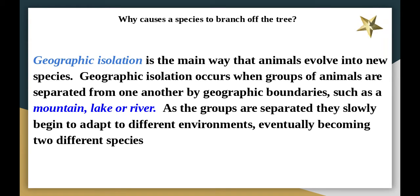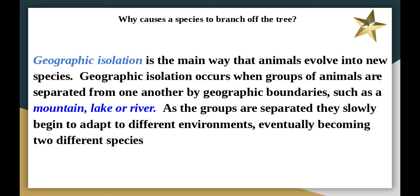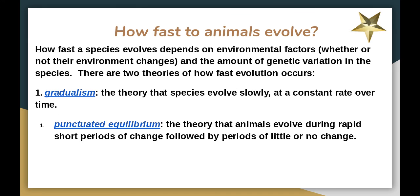So why do species branch off the tree diagram? Like the animals Darwin observed in the Galápagos, they become geographically isolated — separated by a mountain, lake, or river — and they evolve and adapt specific traits that allow them to survive in those environments. For example, certain finches on the Galápagos Islands have beaks that break nuts, beaks that allow them to eat fruit, and some have beaks that let them grab and use tools as a main way of obtaining food.